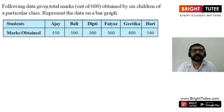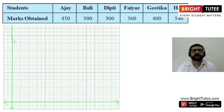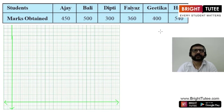The next question gives total marks out of 600 obtained by 6 children of a particular class. We have to represent this data on a bar graph. A table is given showing 6 students and their corresponding marks. The marks are 450, 500, 300, 360, 400, and 540. The highest marks obtained is 540.